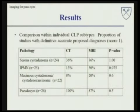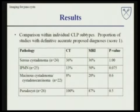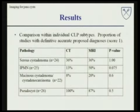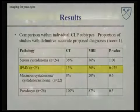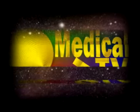We then performed a similar comparison analysis within the individual histologic categories. Depicted in this table are the proportion of studies with a definitive accurate proposed diagnosis — in other words, a score of 1. Although no statistically significant differences were identified, within the category of IPMN, 50% of the MRIs were able to achieve a score of 1 versus only 13% of CTs.